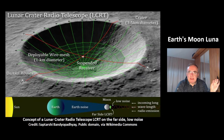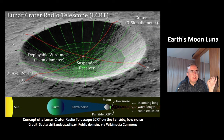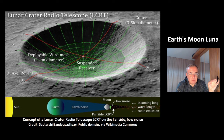This is an interesting concept of a lunar crater radio telescope on the far side. The advantage of this construction is that it would avoid the noise from the Earth.